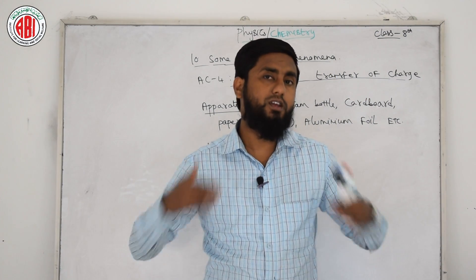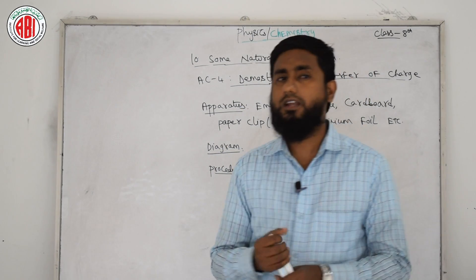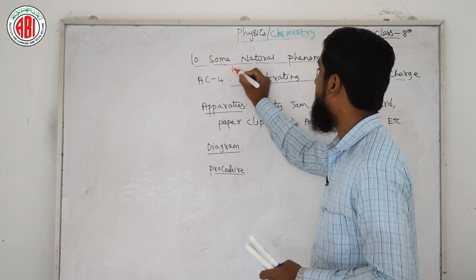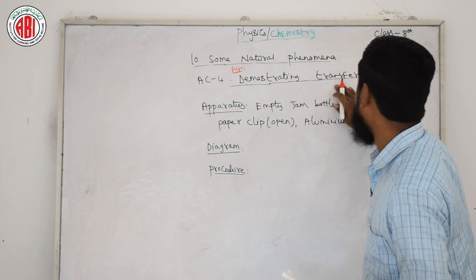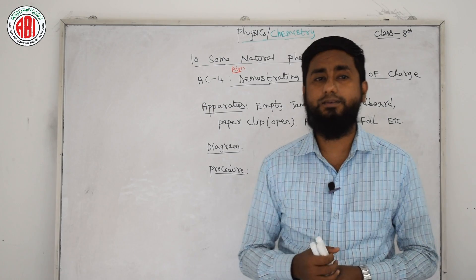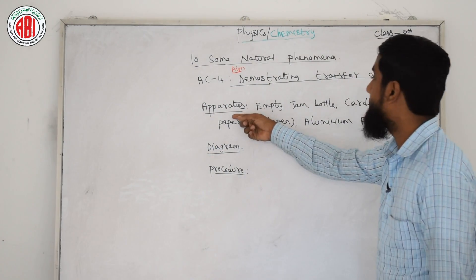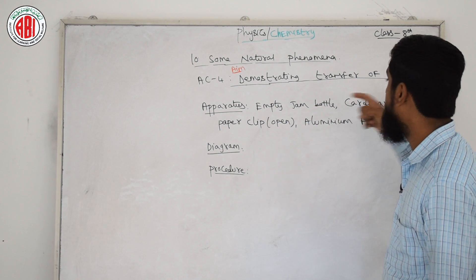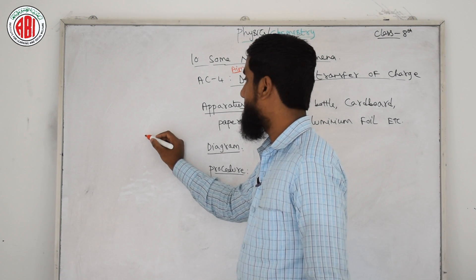अब हम एक और चीज़ करेंगे जिसका नाम है Activity No. 4. यहाँ पर आप aim लिख सकते हैं — aim of this activity is nothing but demonstrating transfer of charge, यानि charge का transfer किस तरीके से होता है, एक demonstration करेंगे। इसमें apparatus में हमको क्या चाहिए: empty jam bottle, cardboard।